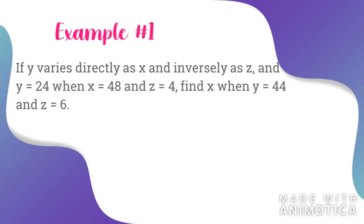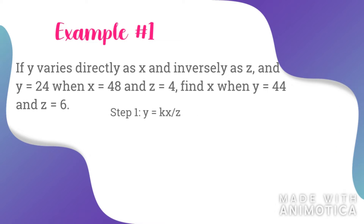Example number one: if y varies directly as x and inversely as z, and y is equal to 24 when x is equal to 48 and z is equal to 4, find x when y is equal to 44 and z is equal to 6. Here are the steps required for solving combined variation problems.